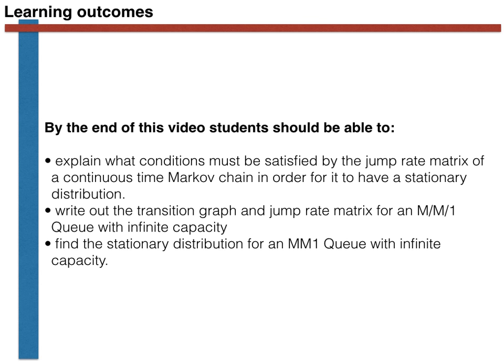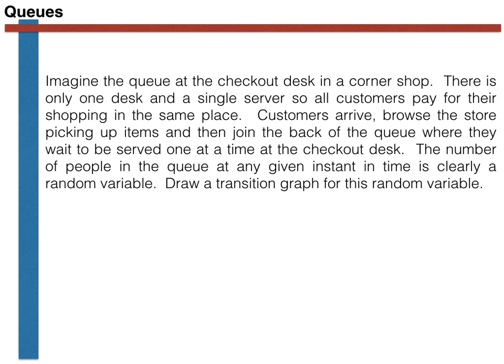So without further ado, let's consider an example of queuing. In particular, I want you to imagine the queue at the checkout desk in a corner shop. In this corner shop, there is only one checkout desk — that is to say, there is a single server. As such, all customers are forced to pay for their shopping in the same place.